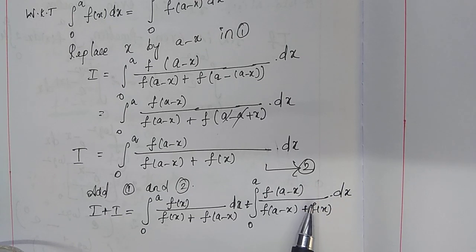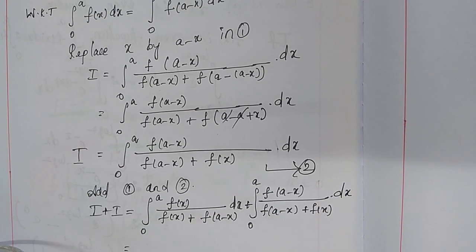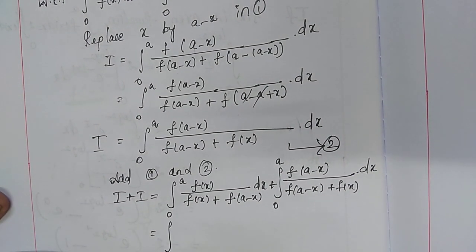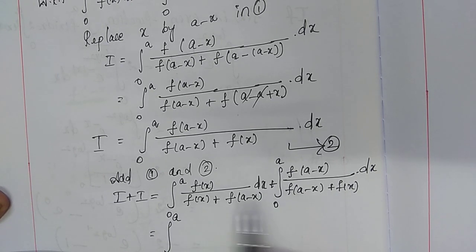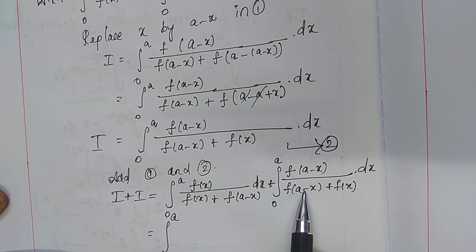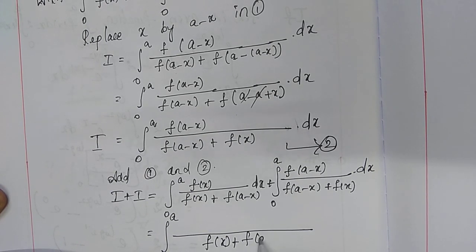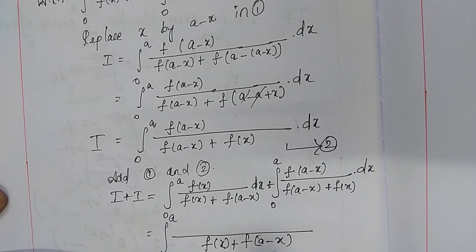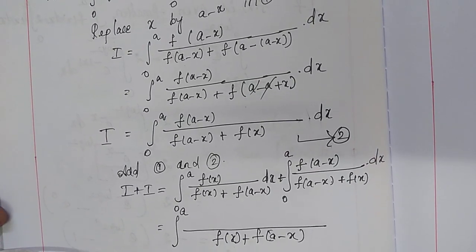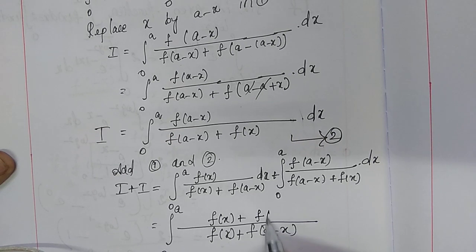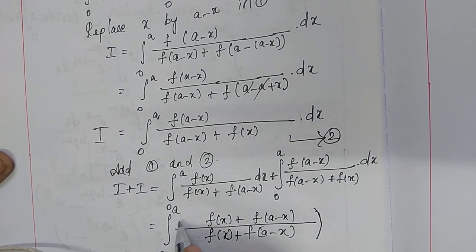The integral limits are the same: 0 to a in both terms. The denominators are also the same: f(x) plus f(a minus x). So write the common limit 0 to a, with the common denominator f(x) plus f(a minus x). The LCM for these two terms is f(x) plus f(a minus x). Adding the numerators gives f(x) plus f(a minus x), all over f(x) plus f(a minus x), into dx.